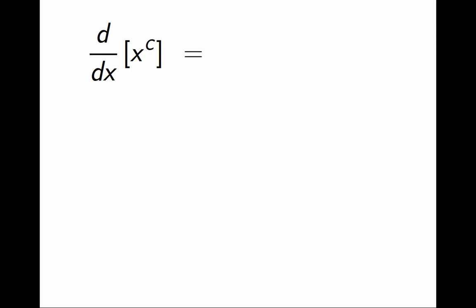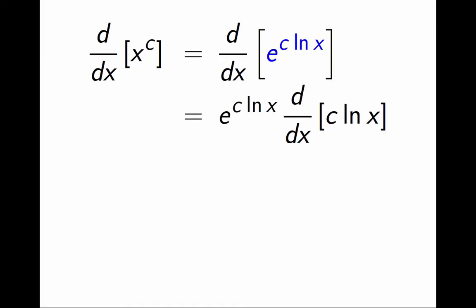I want to compute the derivative of x to the c. First, I rewrite x to the c as e to the c ln x. Now I have to take the derivative of the exponential of a function. Using chain rule, it will be itself times the derivative of the exponent.